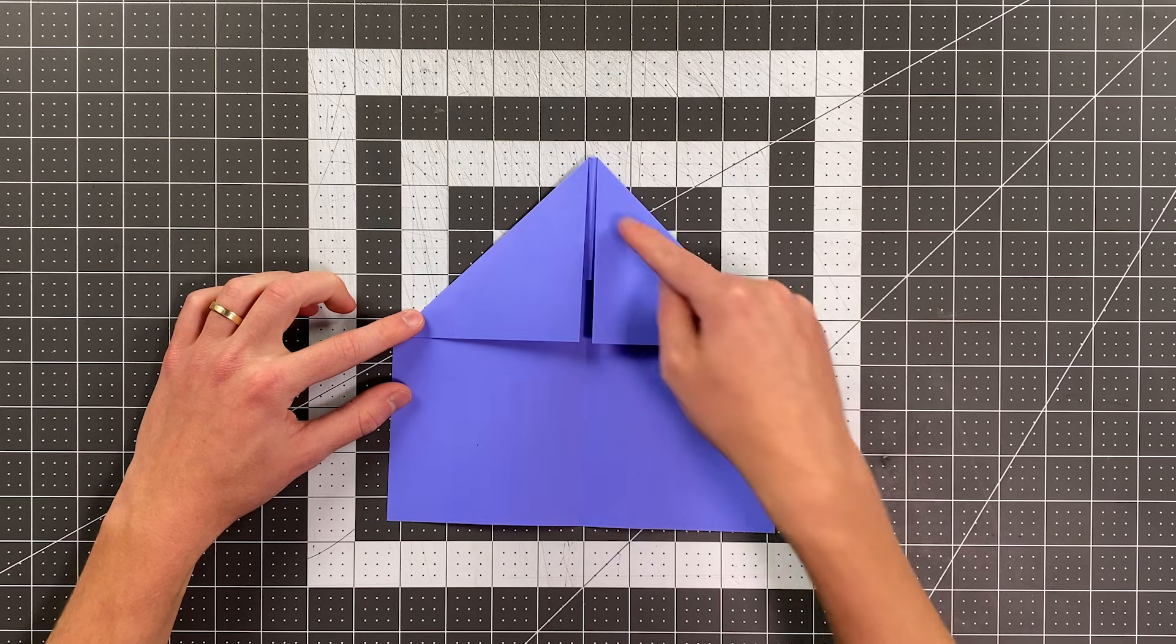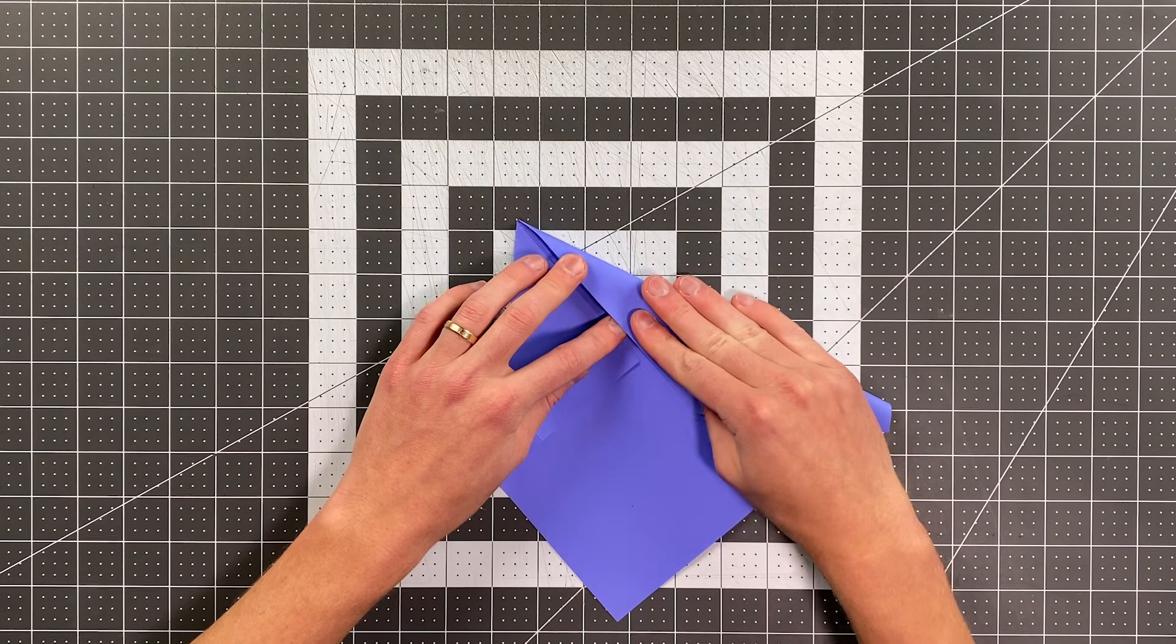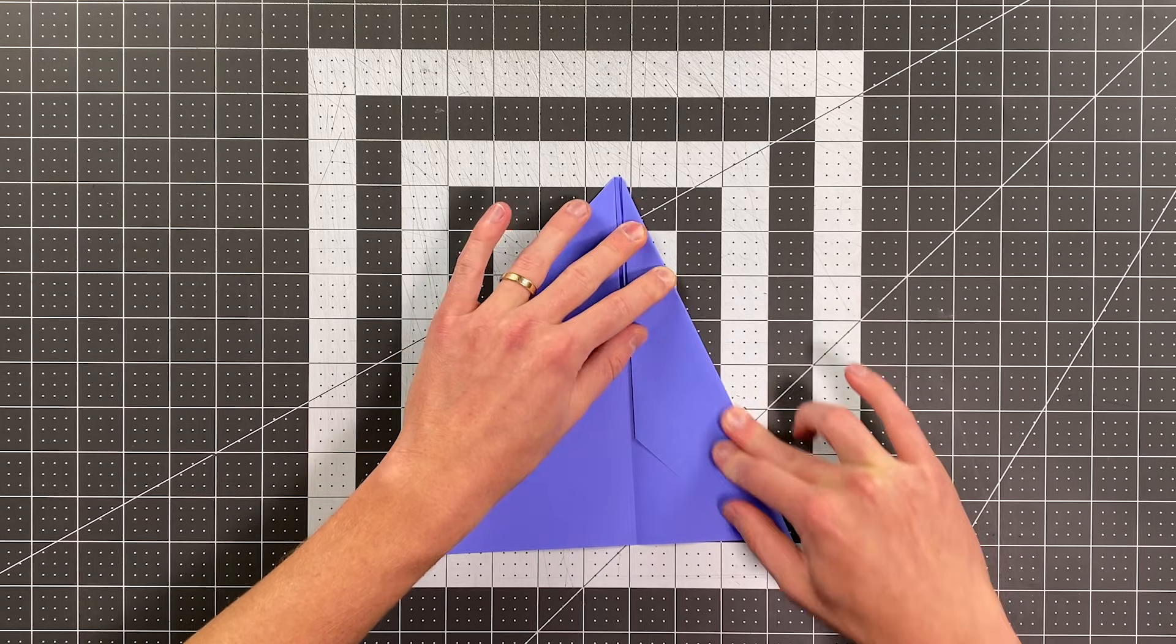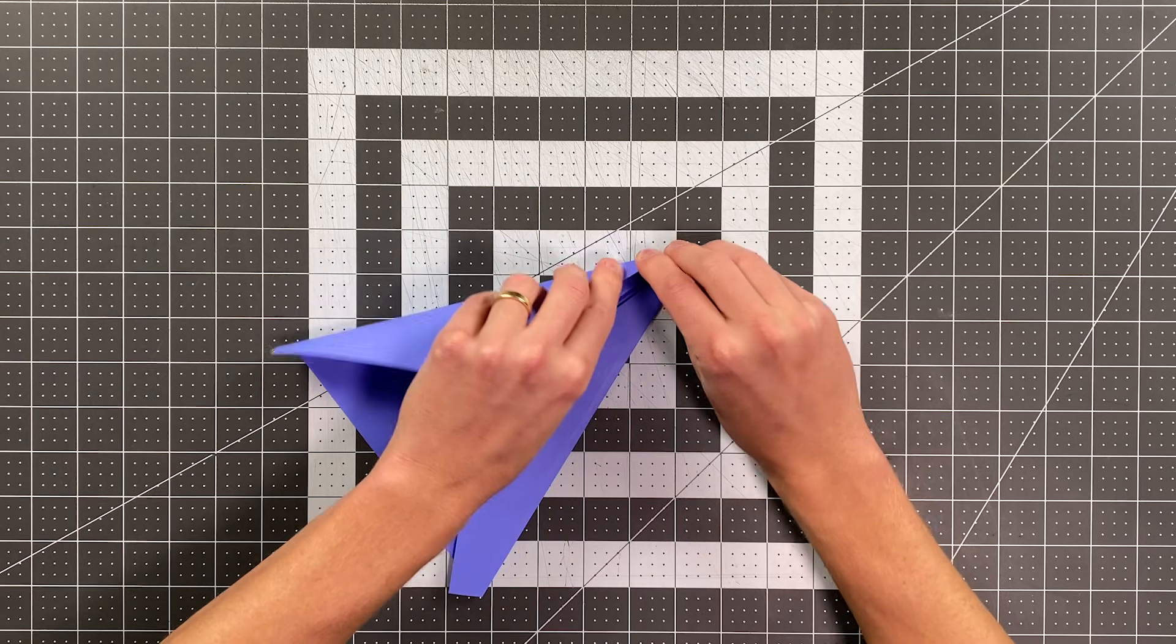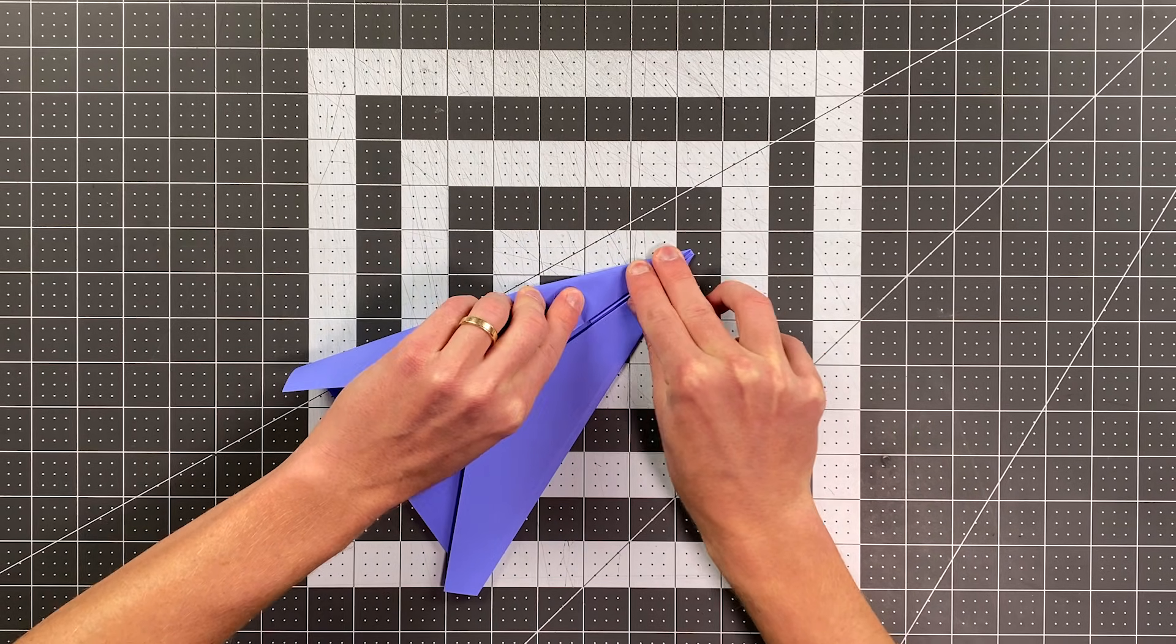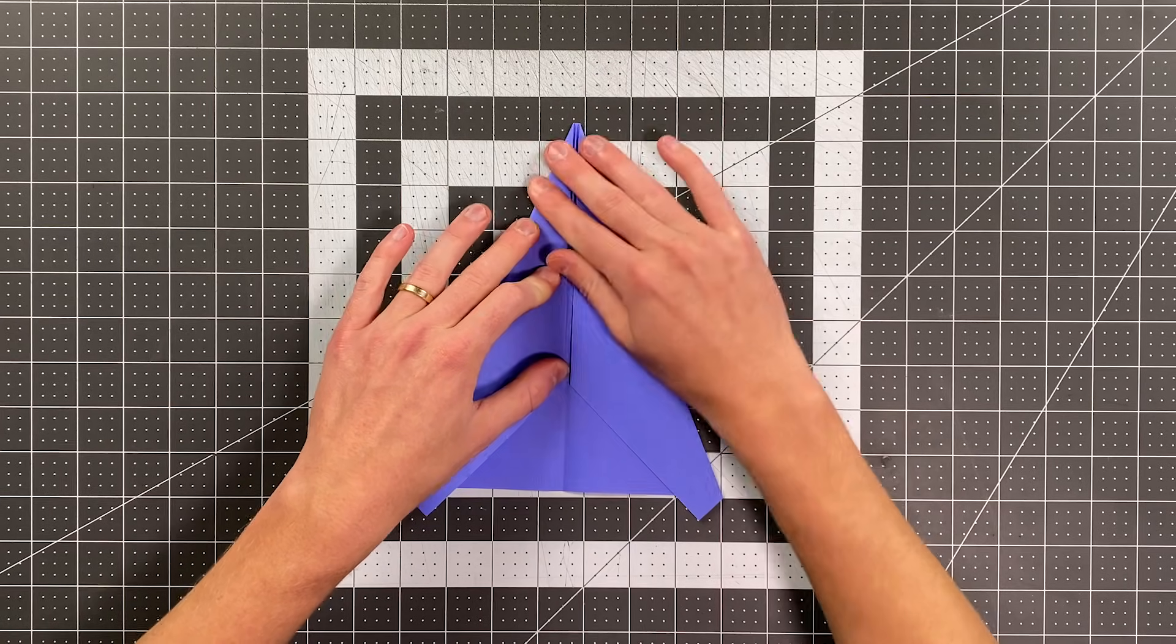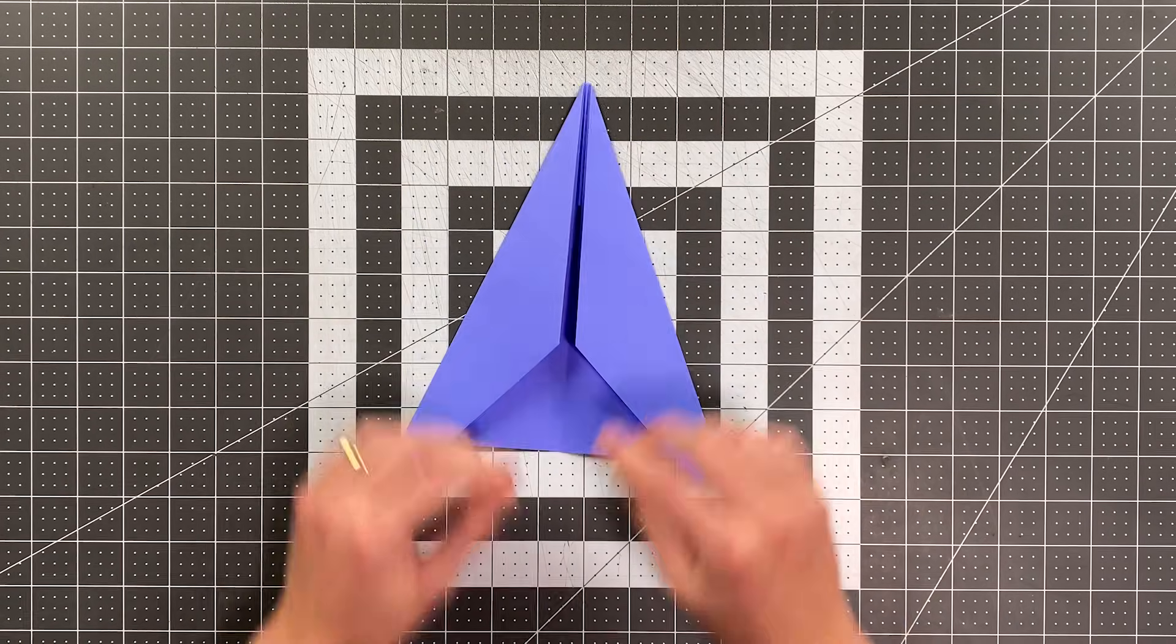Now fold this edge here to that edge, and you're not going all the way to the center once again. Try to control your layers and actually land this edge on that edge that you have below it, just leaving a gap between that edge and the center. And do the same thing on the other side. And your plane should look like this.